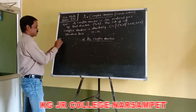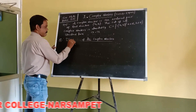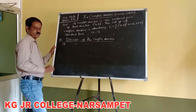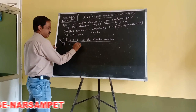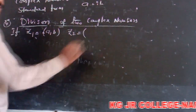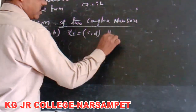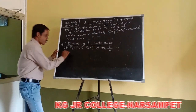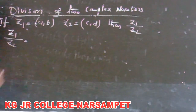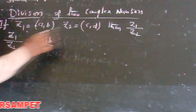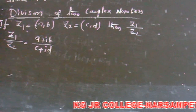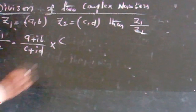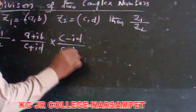Next concept is division of two complex numbers. If Z1 equals ordered pair (a, b) and Z2 equals ordered pair (c, d), then Z1 by Z2 is the division of two complex numbers. Z1/Z2 equals (a + ib) divided by (c + id). The rationalizing factor of the denominator is c − id, so we multiply by (c − id)/(c − id).